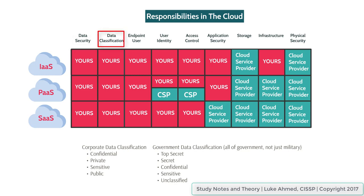Data classification is pretty much the same thing as data security — it falls in line with it. Classification means what label you would apply to the data. Is it confidential or sensitive? There's the corporate versus the military form of data classification. The corporate classification includes: confidential, private, sensitive, and public. The government data classification — covering all government entities like the Department of the Interior and the State Department — includes: top secret, secret, confidential, sensitive, and unclassified. Much like data security, data classification should be all your responsibility.